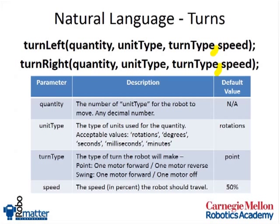So quantity, unit type, and speed are exactly the same. So it's the amount, the types of units. But now we have a turn type, which is a different parameter, which allows us to define what type of turn we want to make, whether it's a point turn or a swing turn. And these are two standard turns that we would have in our robots.